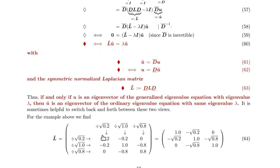For the example above we find this one here. We have to divide the rows and the columns by the square root of the elements of the degree matrix. This is what these two matrices do from the left and to the right.